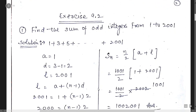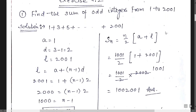Now let us start with the exercise. In the first question, we have to find the sum of odd integers from 1 to 2001. The series is given: 1, 3, 5 — these are the odd numbers from 1 to 2001. Since it says 'from 1 to 2001', we include both 1 and 2001, meaning we start from 1 and end at 2001.